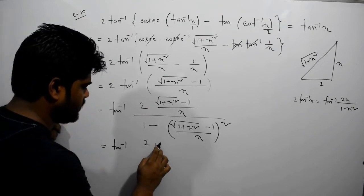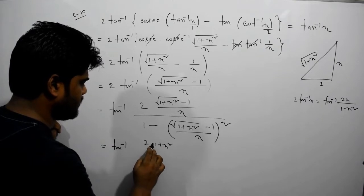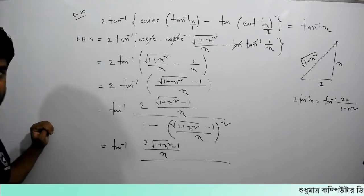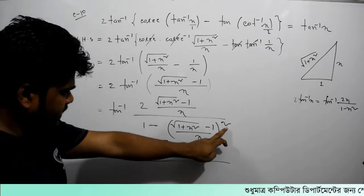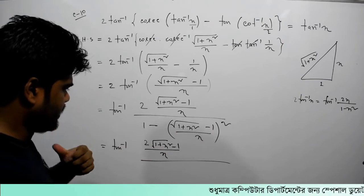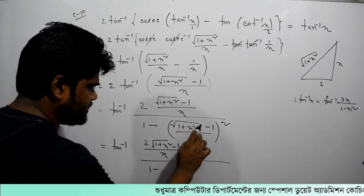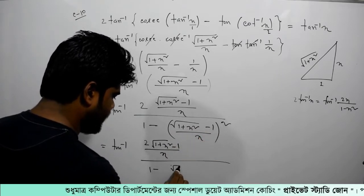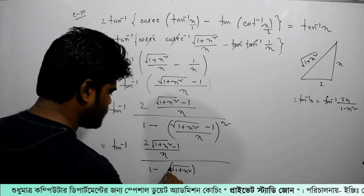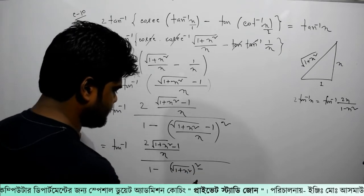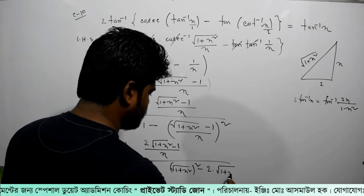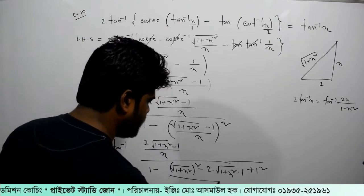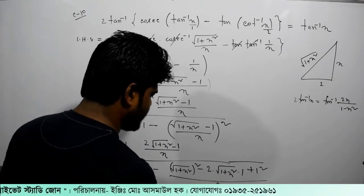2 times 1 plus x square root over minus 1, divided by x. Then using a minus b whole squared, and a plus b squared equal to x squared.